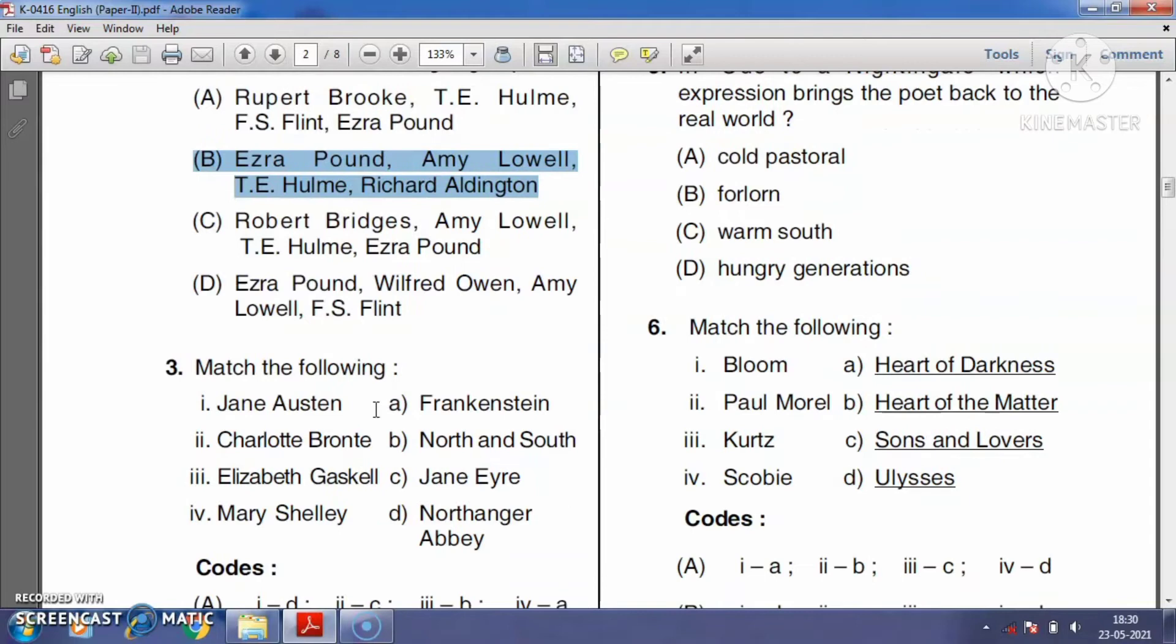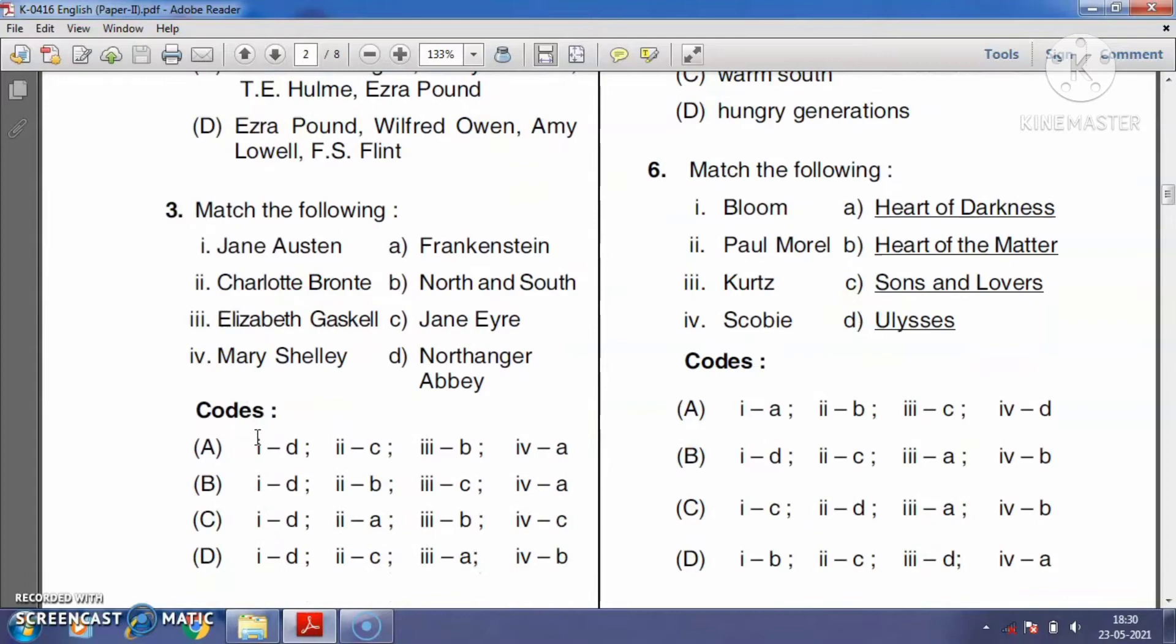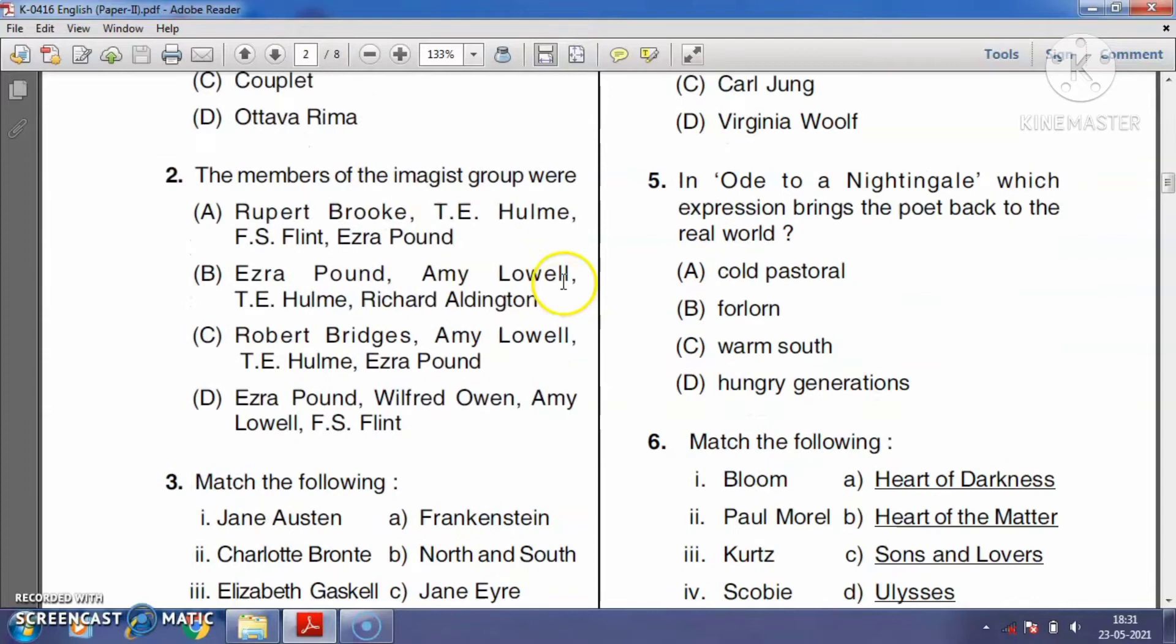Question number three: Match the following. Jane Austen wrote the novel Northanger Abbey published in 1817. Charlotte Brontë wrote the novel Jane Eyre published in 1847. Elizabeth Gaskell has written the novel North and South, which was published in 1855. Mary Wollstonecraft wrote Frankenstein, published in 1818. So the right answer is option A.